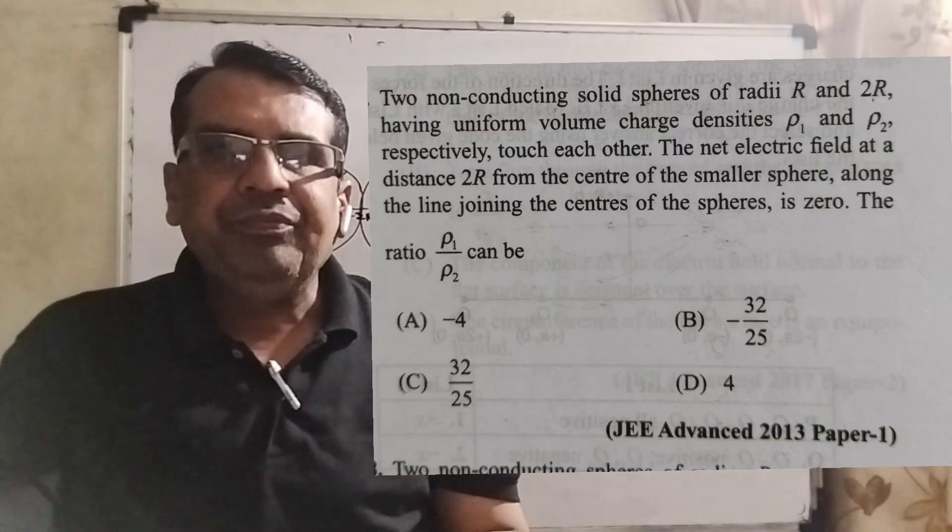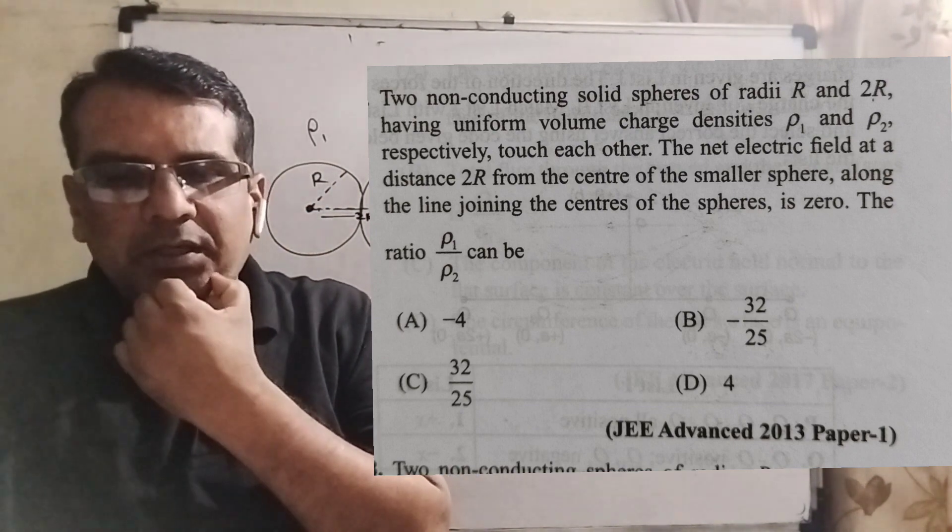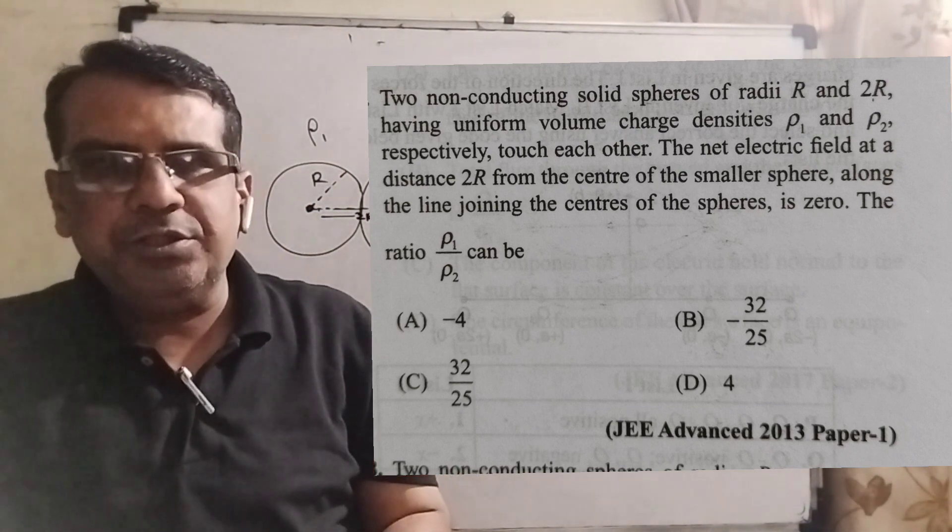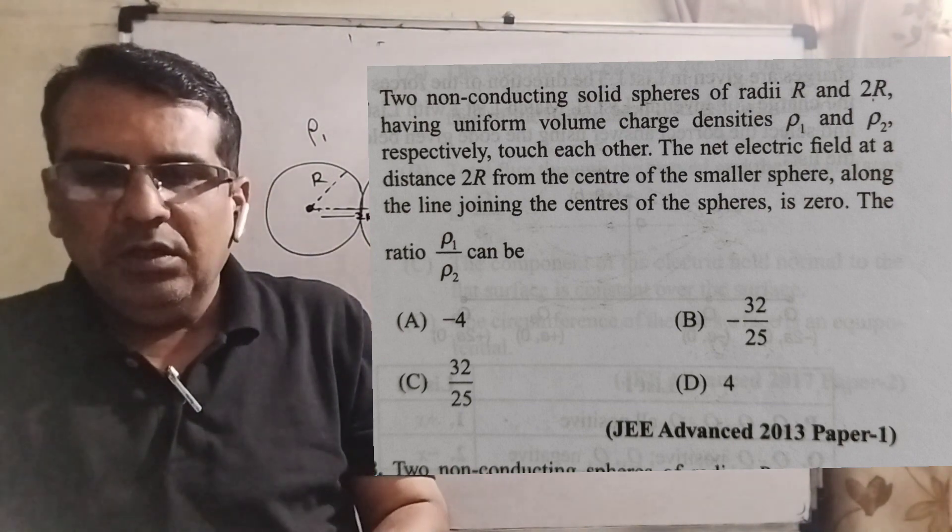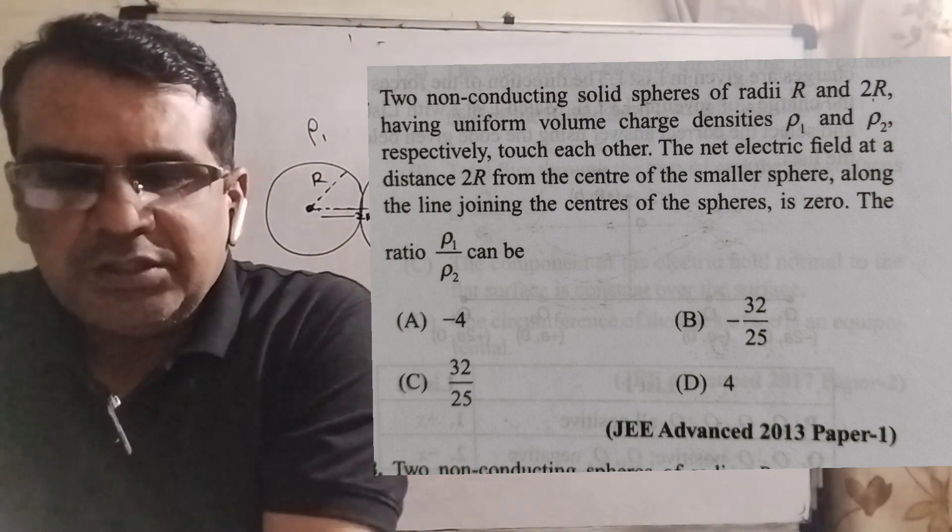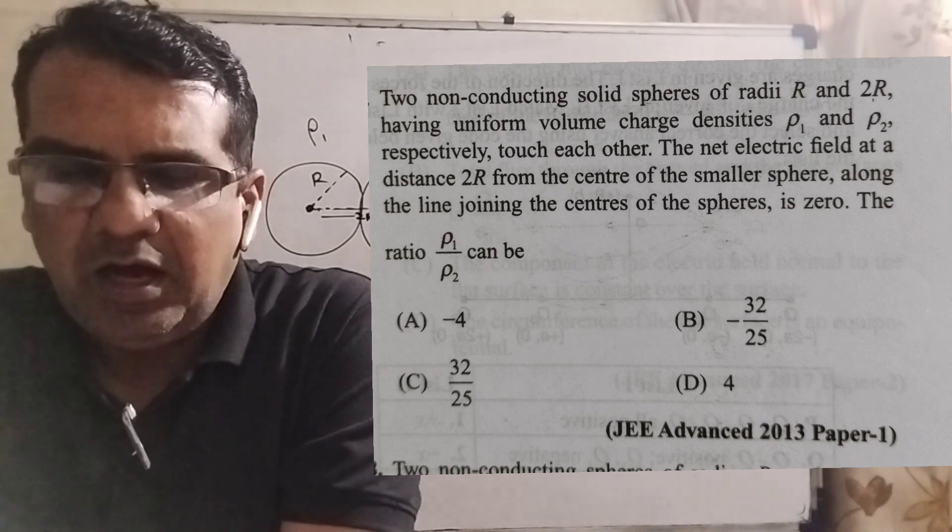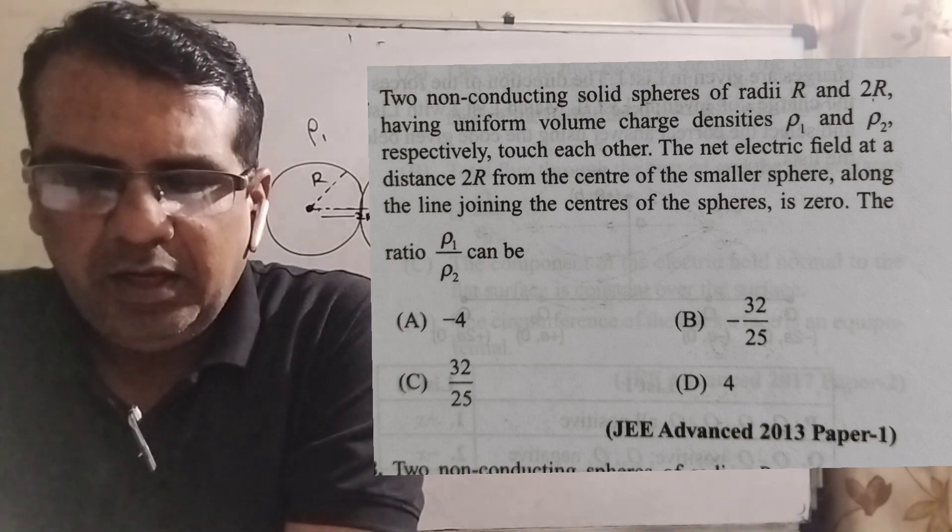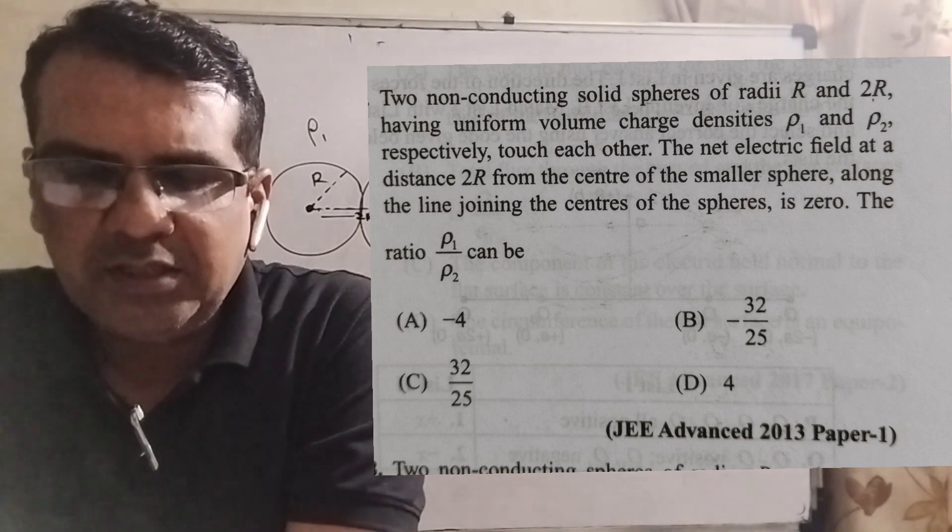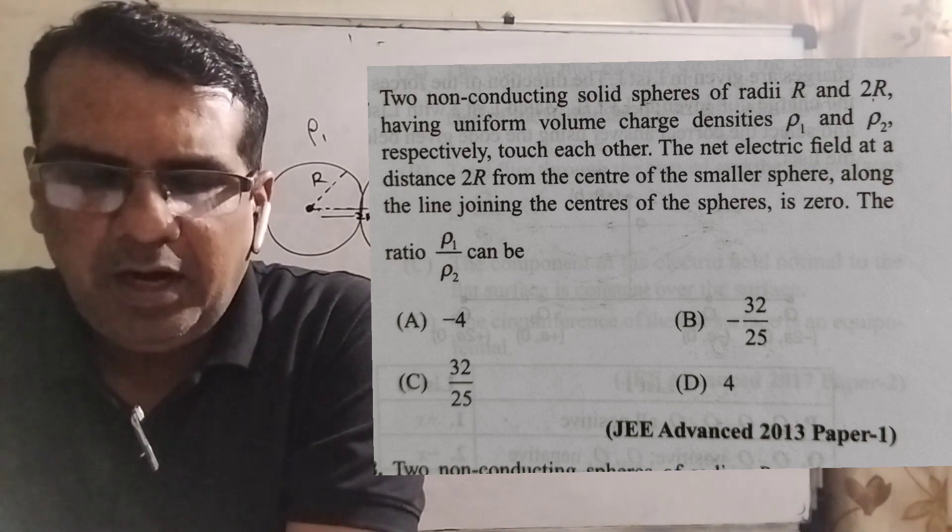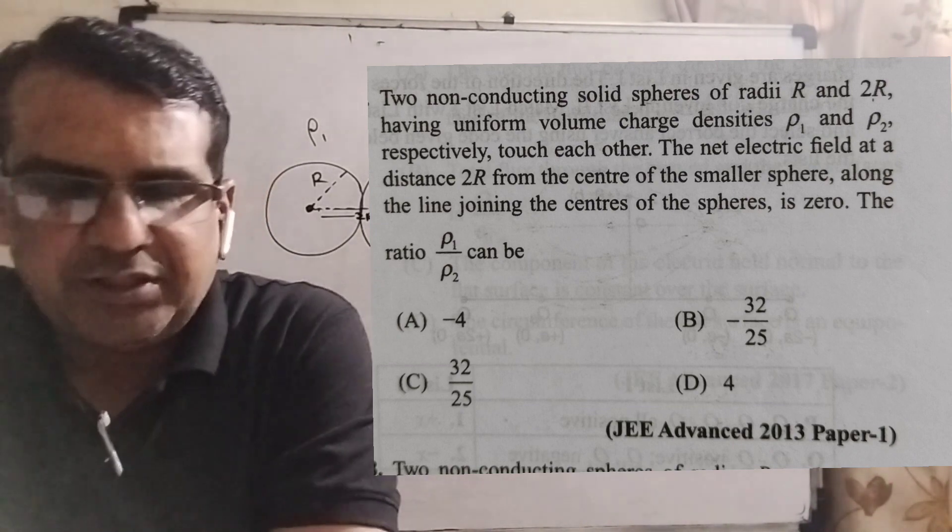Let's see what the question says. Here the question is multiple choice question, maybe more than one. What the question says? Two non-conducting solid spheres of radius r and 2r having uniform volume charge densities rho 1 and rho 2 respectively.